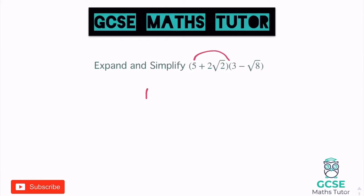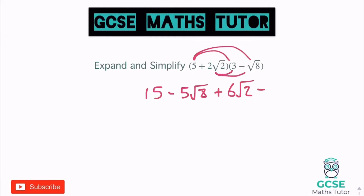So: 5 times 3 is 15. 5 times negative root 8 is negative 5 root 8. Then 2 root 2 times 3 — numbers times numbers, roots times roots — that's 2 times 3 which is 6, so plus 6 root 2. And for the last part, it's positive times negative, so negative. Working to the side: 2 times 1 is 2, and root 2 times root 8 is root 16. So we get negative 2 root 16. Root 16 is 4, so that's negative 2 times 4, which is negative 8.